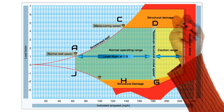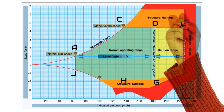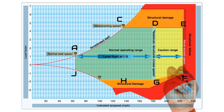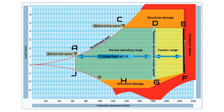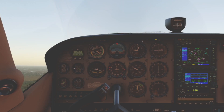From point E to point F is the never exceed speed, or VNE. If we exceed this speed, it may result in structural damage to the aircraft. This speed is normally represented by a red line on the airspeed indicator.